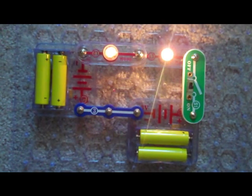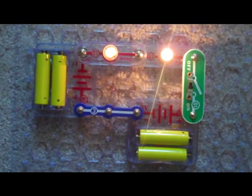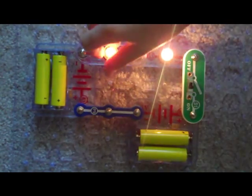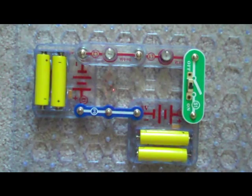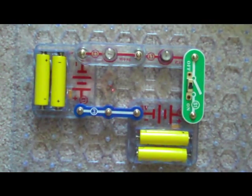In a series circuit, electricity flows in only one path. If the current is interrupted by unscrewing one of the bulbs, for instance, the circuit is no longer closed and the flow of electricity is stopped.